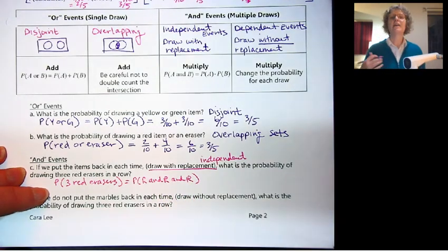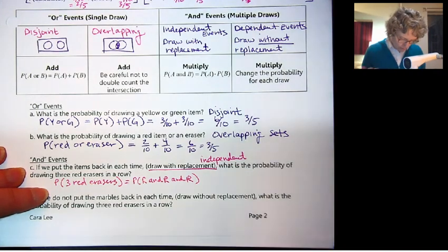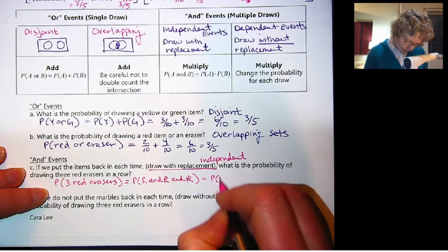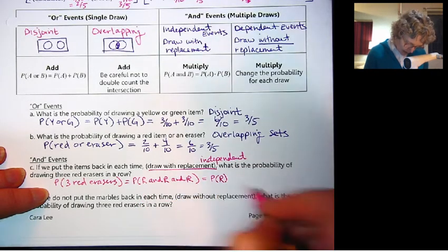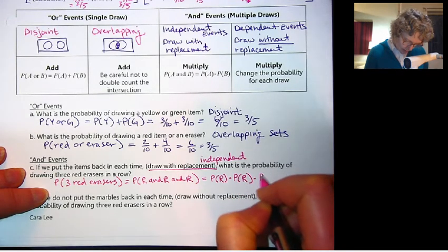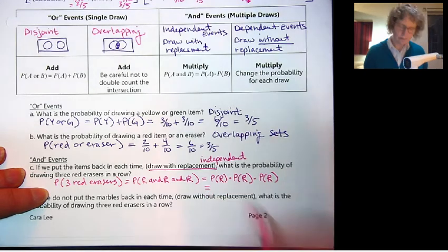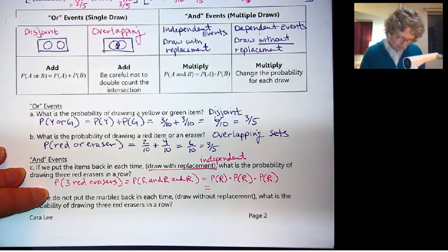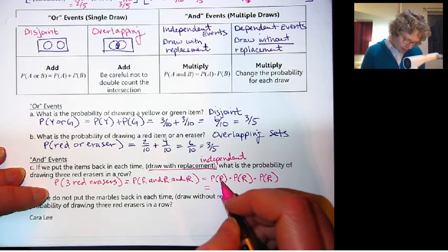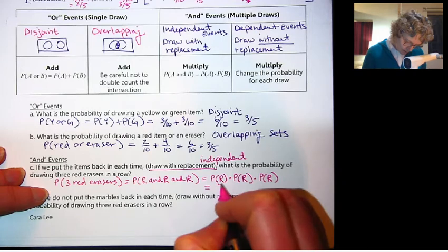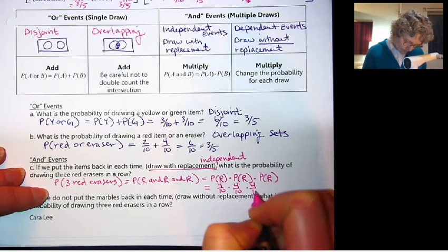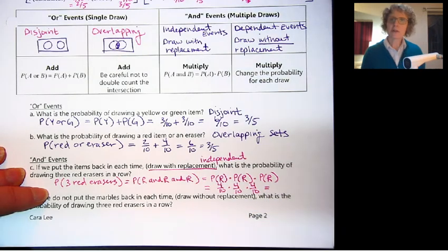What's the probability of drawing three red erasers in a row? So we want probability of three red erasers. Think of this as getting probability red, and red, and red. We can multiply these individually. The chance that you get a red the first time times the chance that you get a red the second time, times the chance that you get a red the third time. Those are going to be the same every time. So red eraser is 4 out of 10.